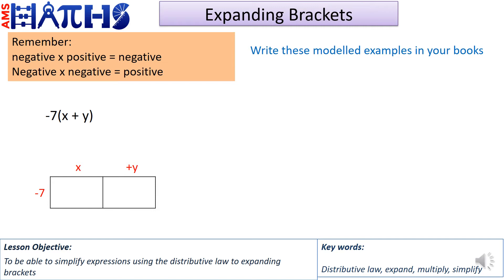Here are a few examples I'd like you to try before I go through the solution. Remember: a negative times a positive gives you a negative, and a negative times a negative gives you a positive. I've already set up the boxes for you, so all you need to do is multiply the terms by the number to the left. Pause your video, try to get your answer, then resume and we will discuss the solution.